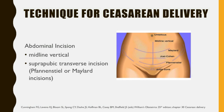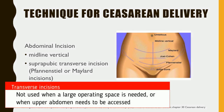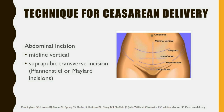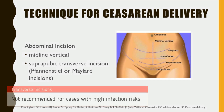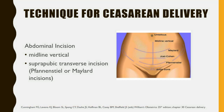The use of the Pfannenstiel incision is often discouraged for cases in which a large operating space is important or in which access to the upper abdomen may be needed. Because of the layers created during incision of the internal and external oblique aponeurosis with transverse incisions, purulent fluid can collect between these layers. Therefore, cases with high infection risks may favor a midline incision.